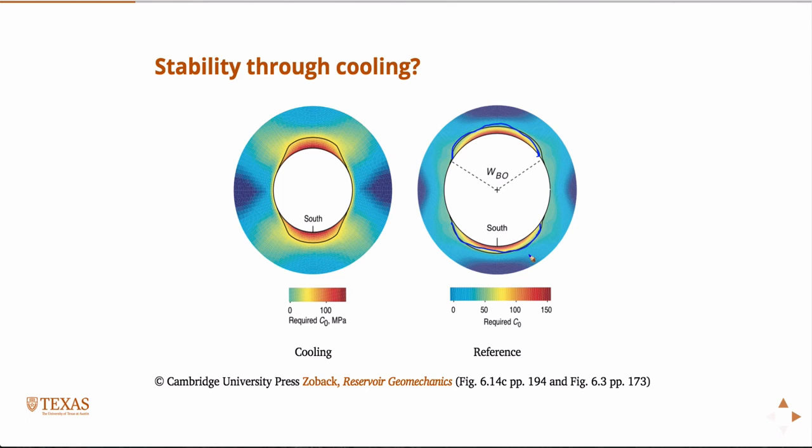And then if we solve the same problem, but we added the temperature-dependent term, that 25 degree delta T, then yes, we have smaller breakout regions. So, this is how the stress field were to change, just by adding that term due to the thermal stresses. And so, yeah, we would get a smaller breakout region.